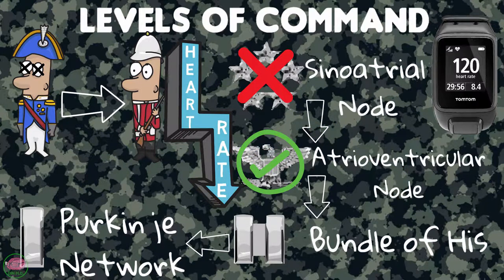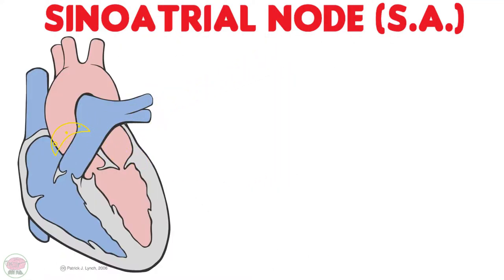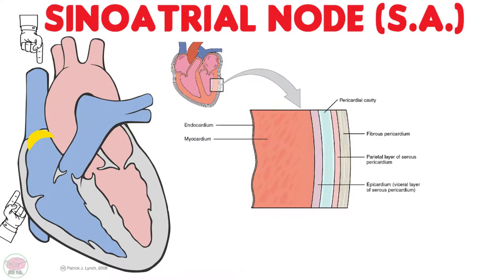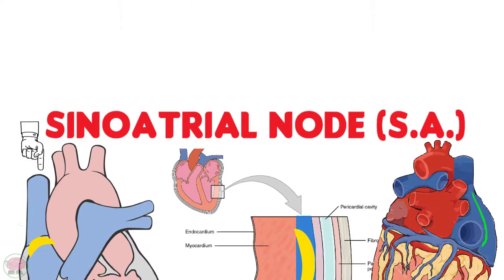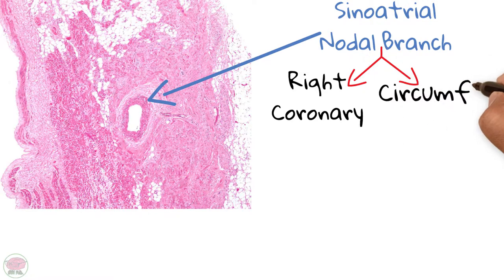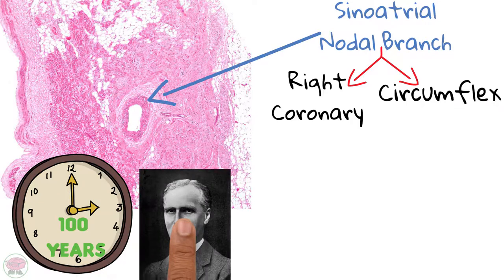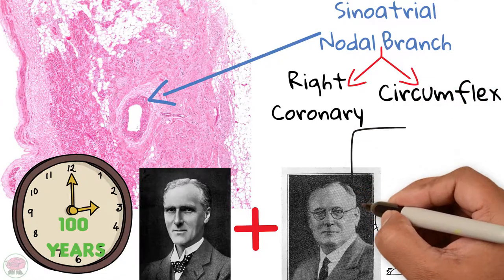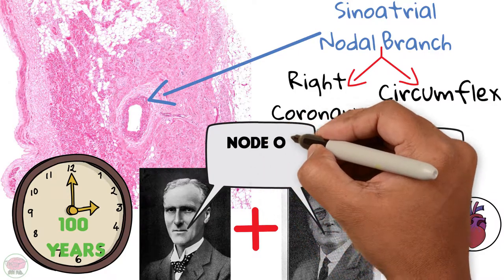The sinoatrial node has a crescent shape and is located between the junction of the superior vena cava and the right atrium. It does not occupy the full thickness of the atrial wall and is located in the subepicardium within the terminal groove. Its location is marked by the sinoatrial nodal branch derived from the right coronary artery or the circumflex artery. This node was discovered more than 100 years ago by Sir Arthur Keith, who worked with medical student Martin Flack on hearts of small mammals and discovered what they described as a wonderful structure in the right auricle — that's why it is also called the node of Keith-Flack.